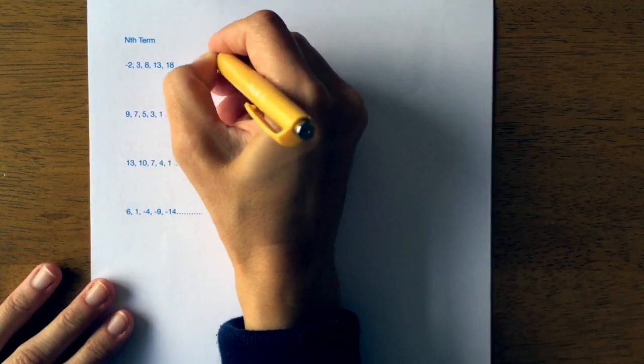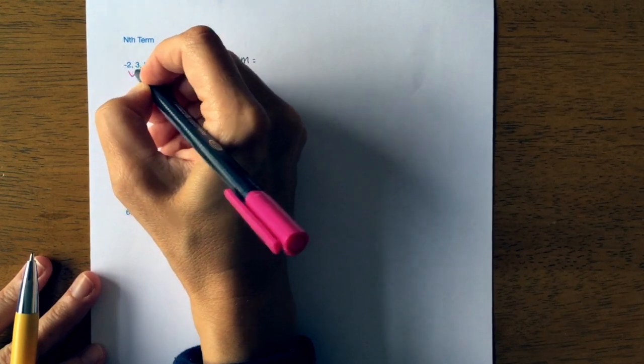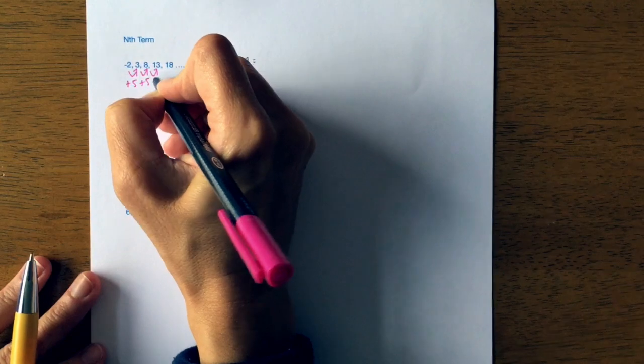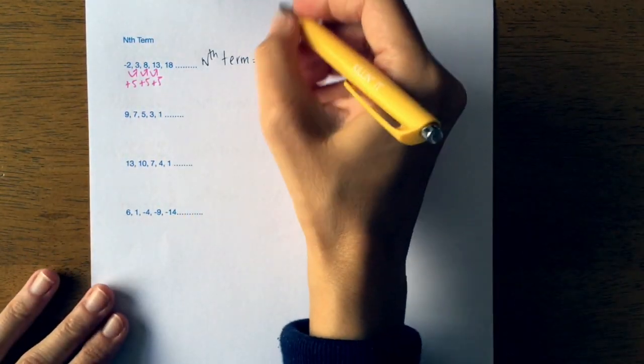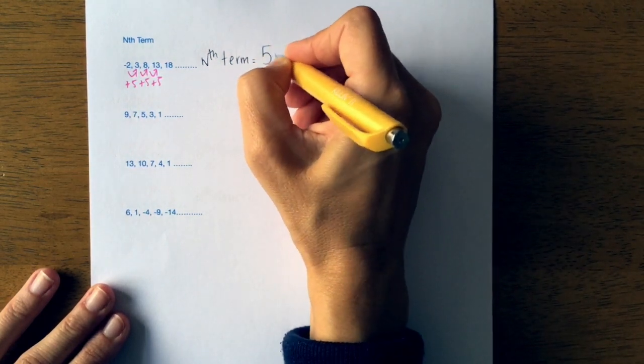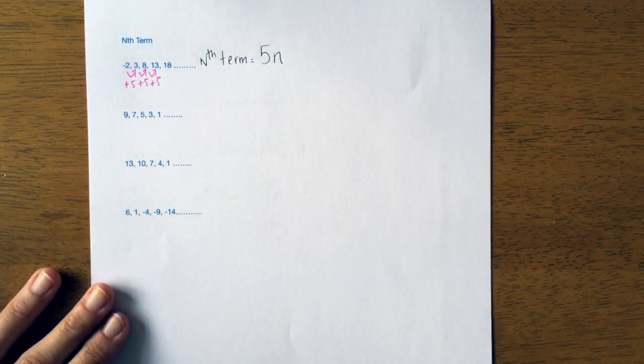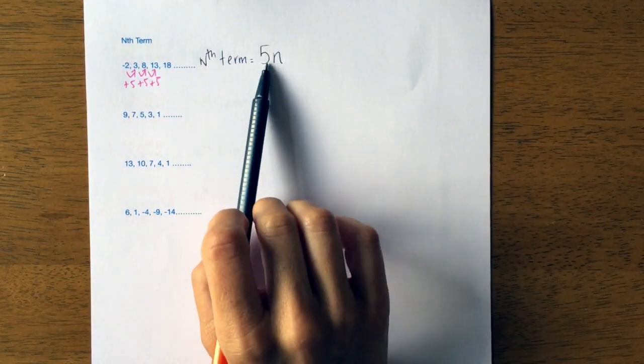If you remember from my last video, to find the nth term you had to find the difference between them each time. So this pattern was plus five, so I added five every time. This meant it was my times table, so it was 5n. I wrote the times table that I needed to compare the new pattern to above the sequence.